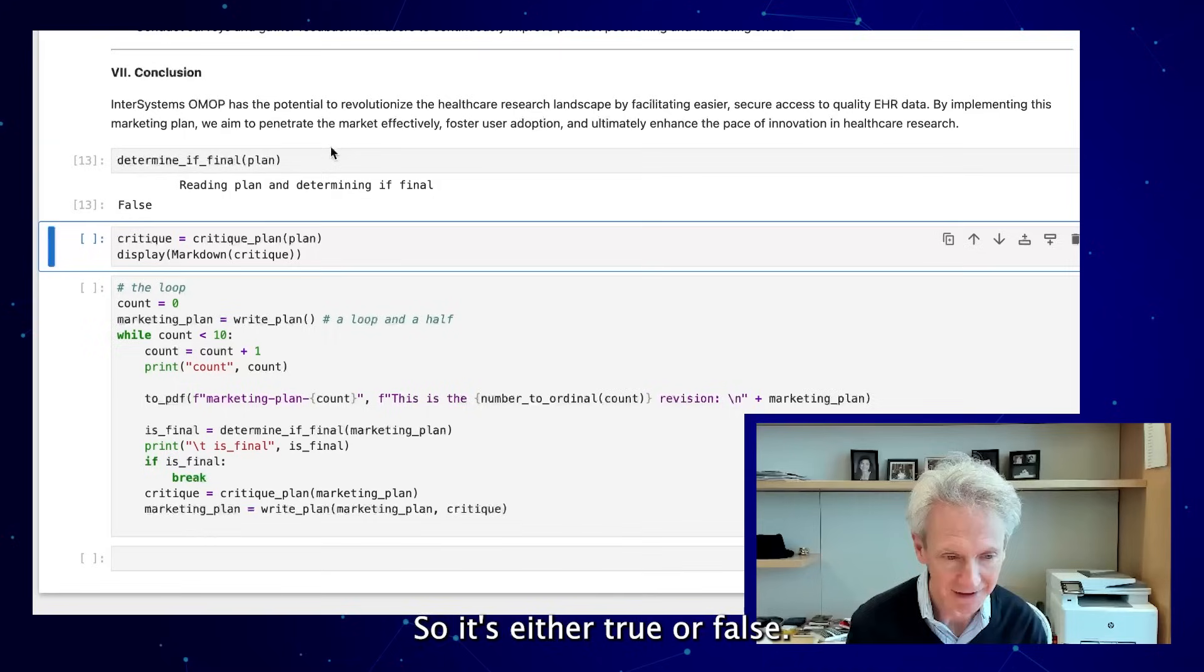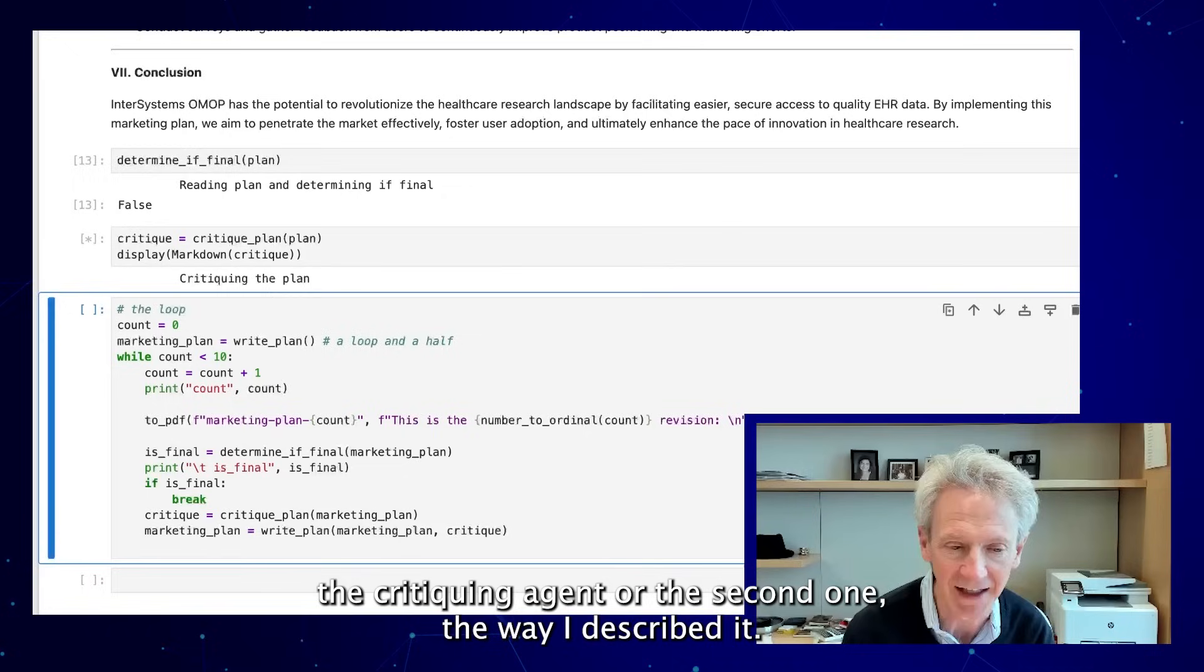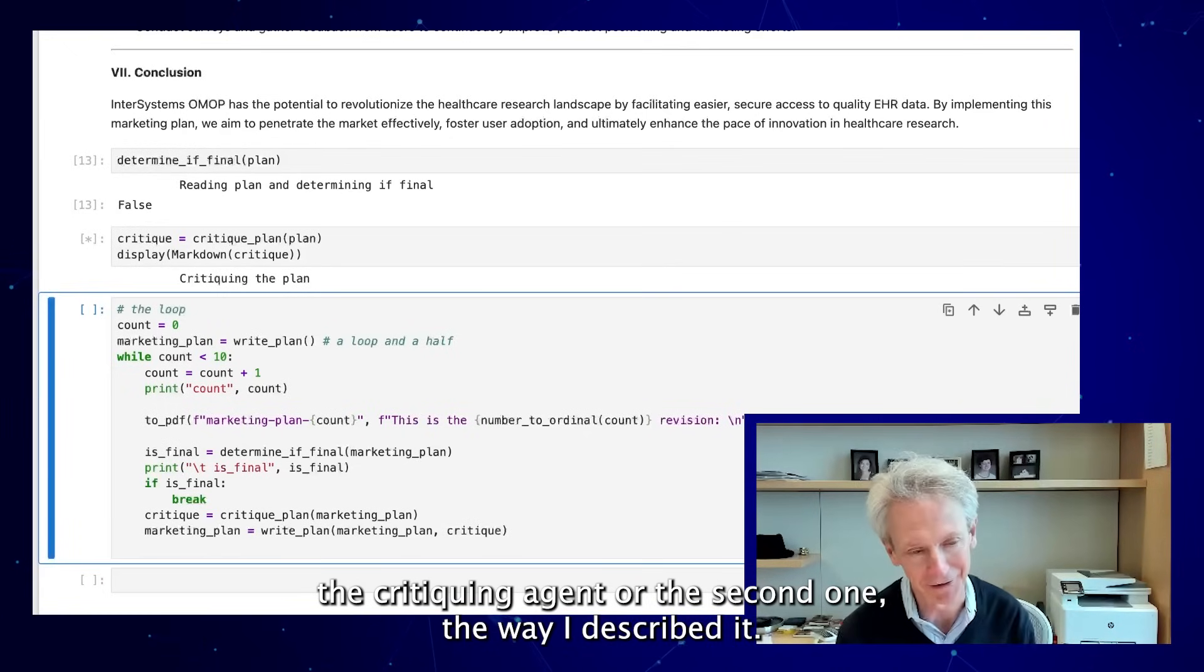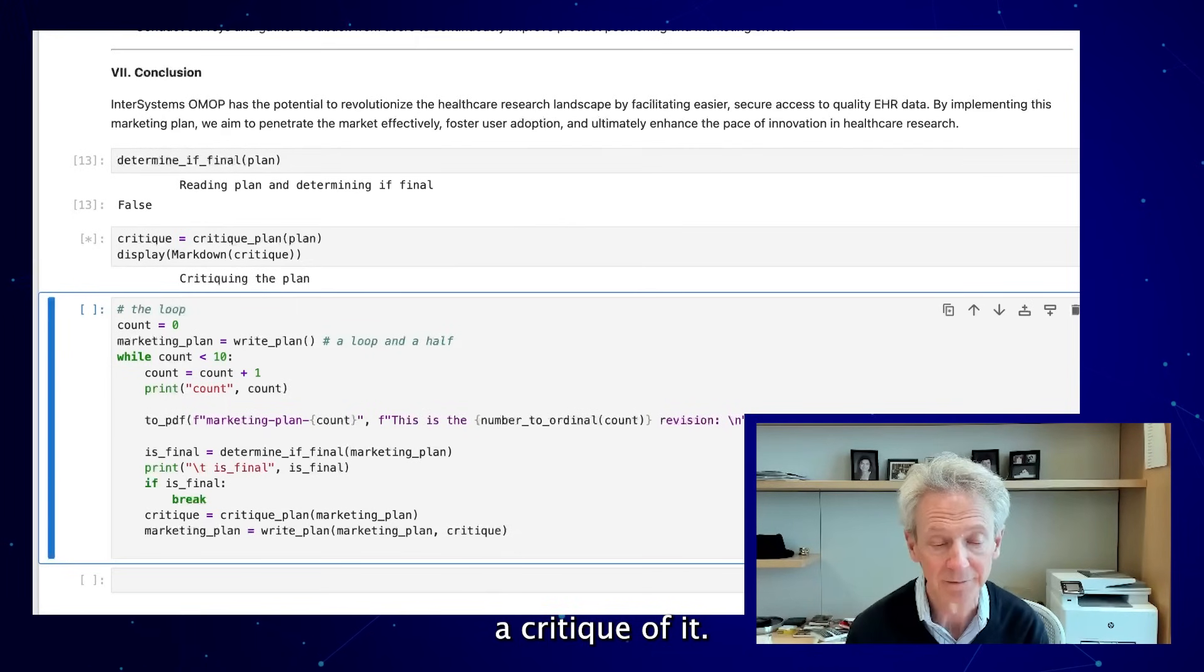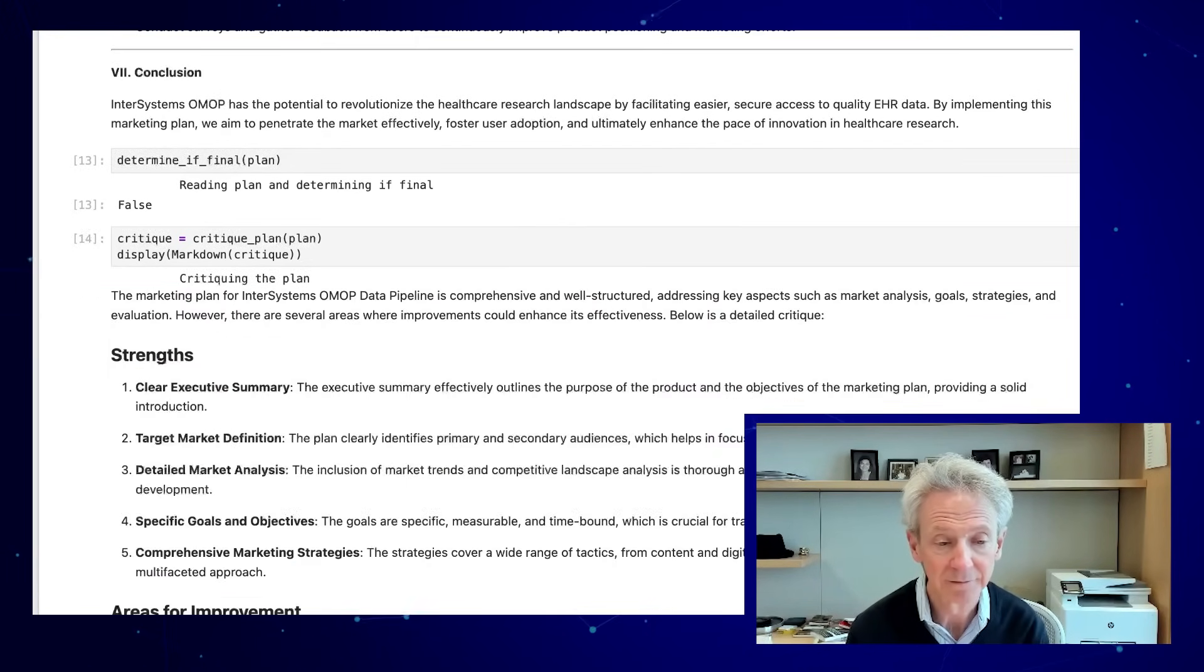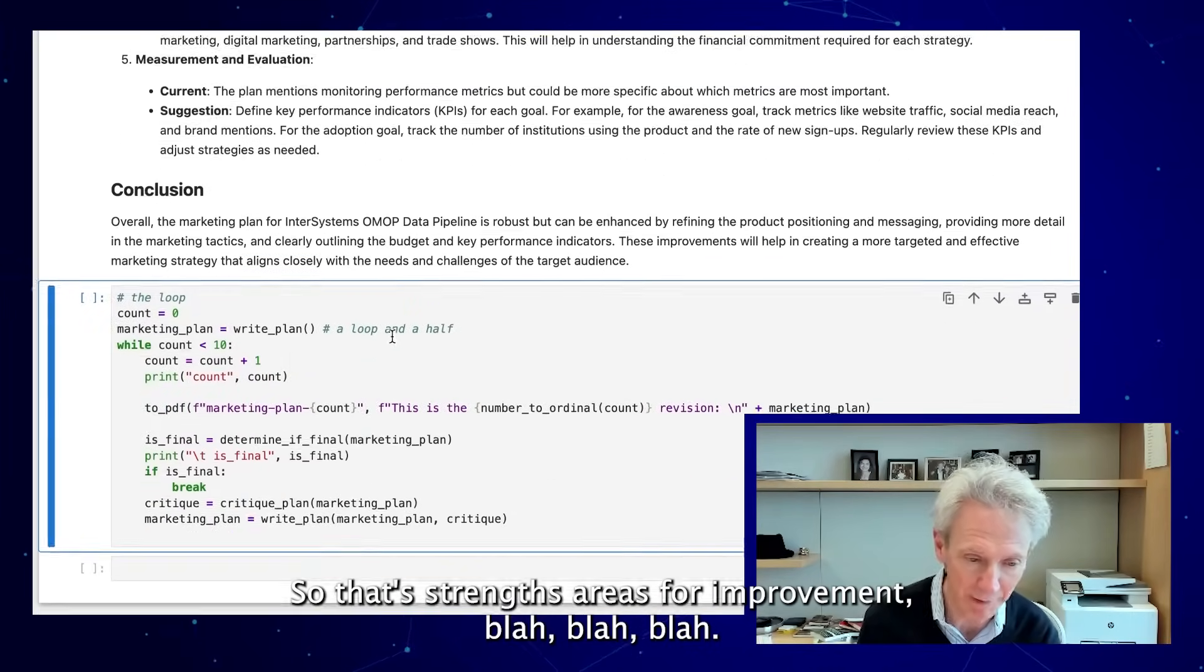It's either true or false. This is the third agent, the critiquing agent, or the second one the way I described it. The critiquing agent is reading the plan and providing a critique of it. So that's strengths, areas for improvement, blah blah blah.